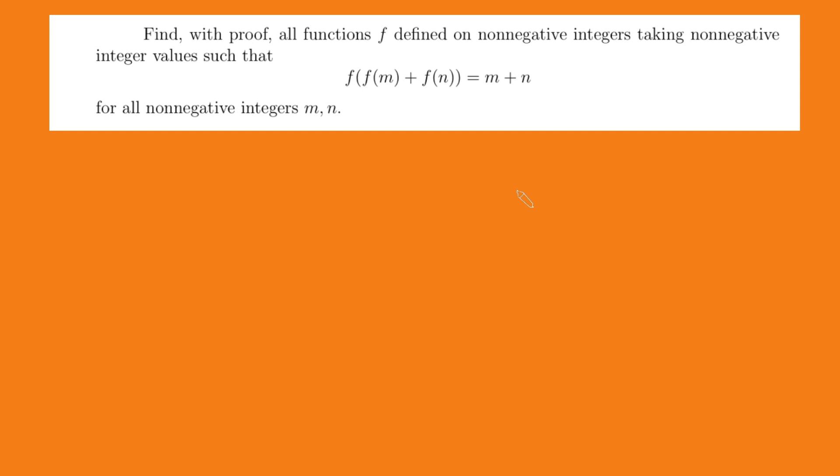Hi, thanks for joining me today. I've got a cool functional equation problem I want to solve. We want to find with proof all functions f defined from the non-negative integers to the non-negative integers such that f of f of m plus f of n equals m plus n for all non-negative integers m and n.